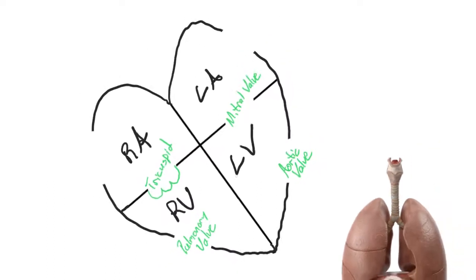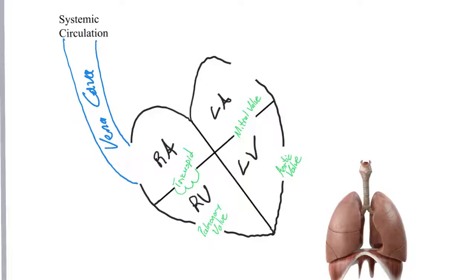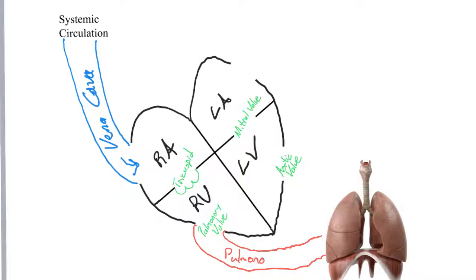Now that we have our heart valves labeled, let's zoom back out to trace blood flow. In the human body, blood returns to the heart via veins and leaves the heart via arteries — an important distinction. From systemic circulation, blood returns to the heart via the vena cava and enters the right atria. From the right atria, blood is pumped into the right ventricle, where it's then pumped out to the lungs via an artery called the pulmonary artery.